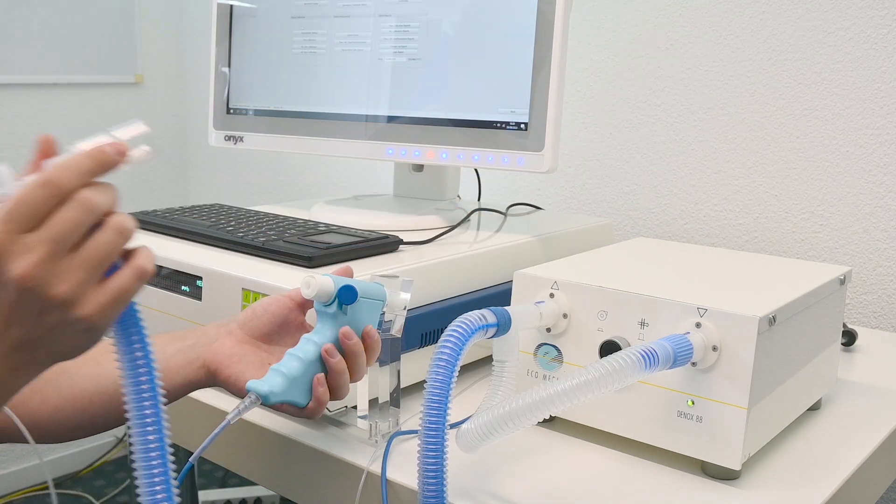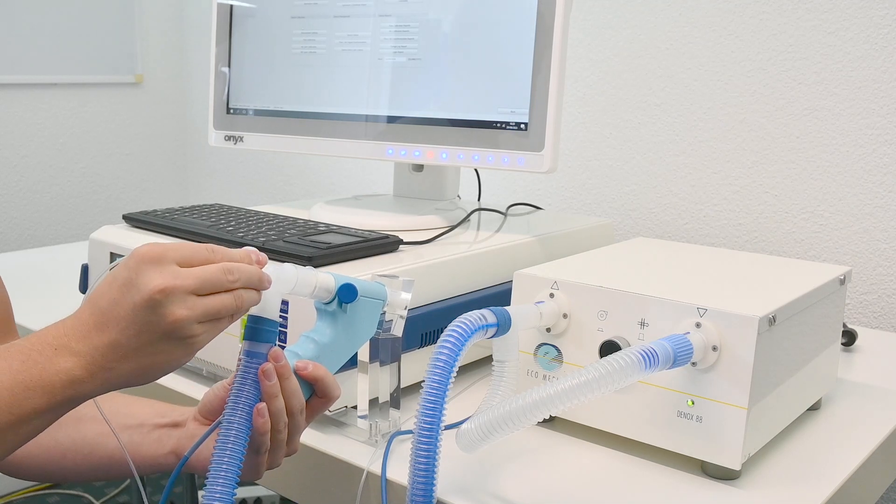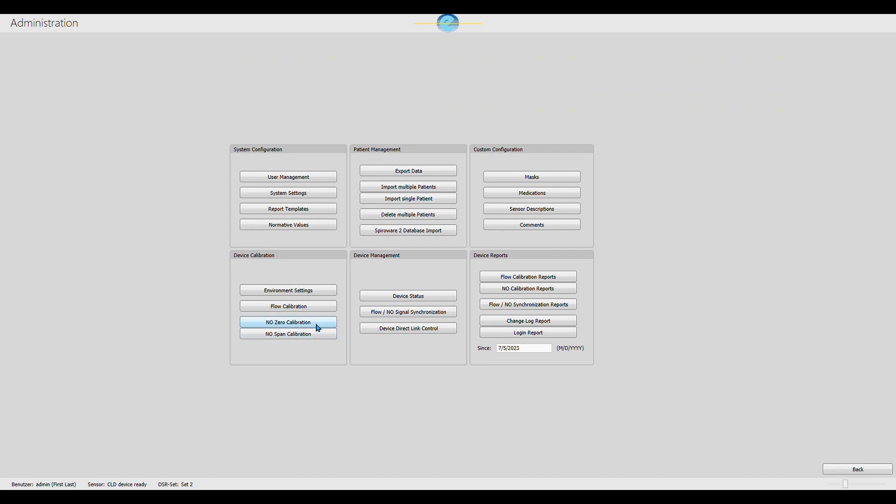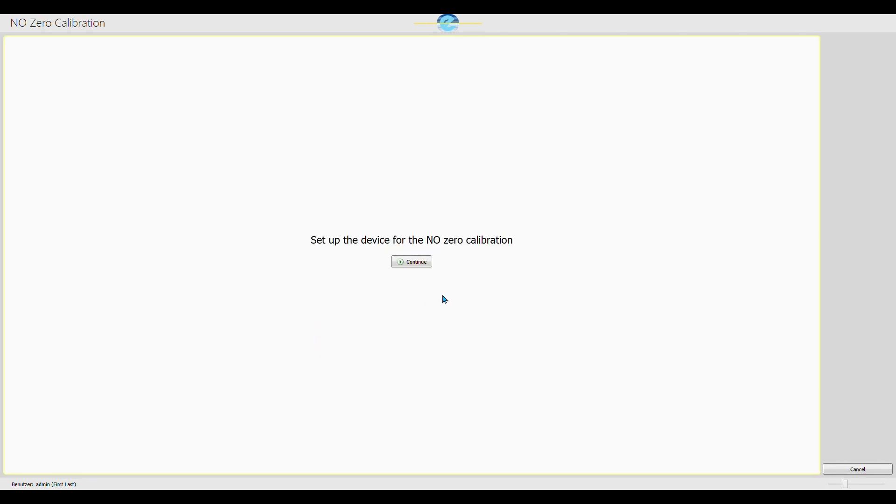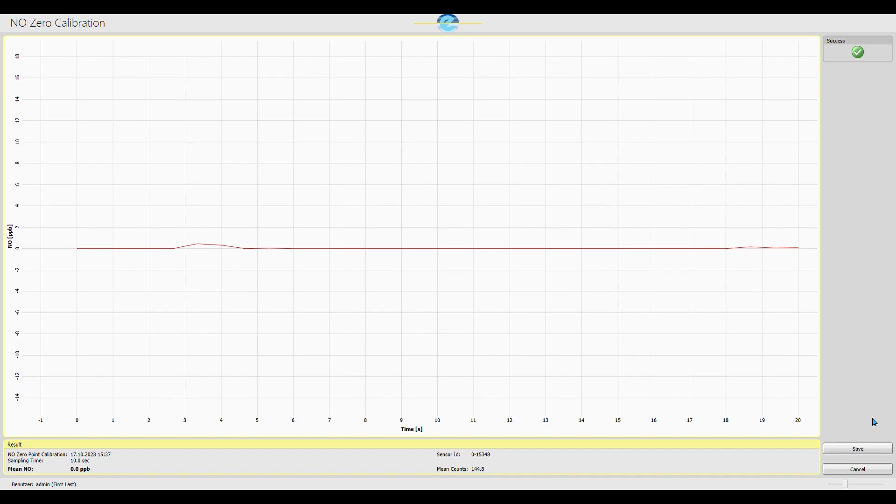Attach the measurement set and sample tube to the flow head. Then, open the Administration menu in SpiroWare software and start the NO0 calibration. The calibration takes approximately 20 seconds and successful completion is shown by a green check mark. Save the calibration and close the calibration window.